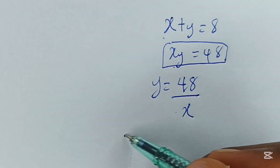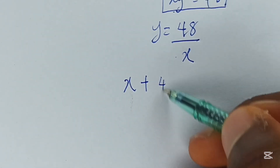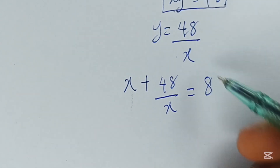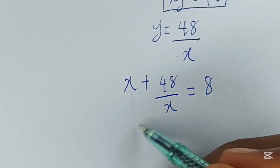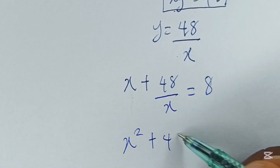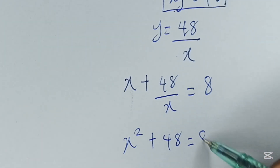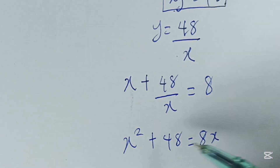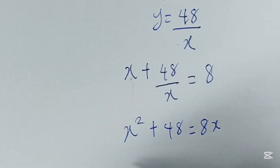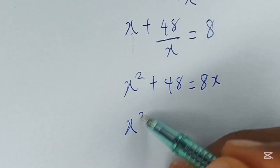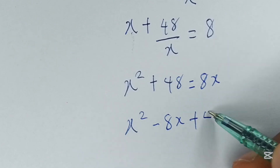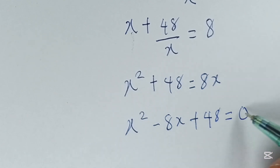Substituting this into the first equation, we have x plus 48 over x is equal to 8. Multiplying each term by x gives x squared plus 48 is equal to 8x. Hence we have x squared minus 8x plus 48 is equal to 0.